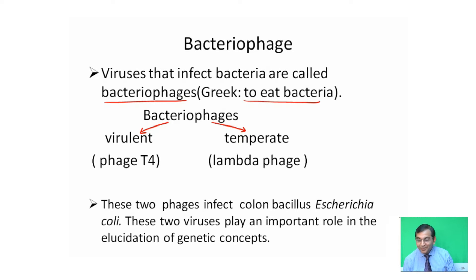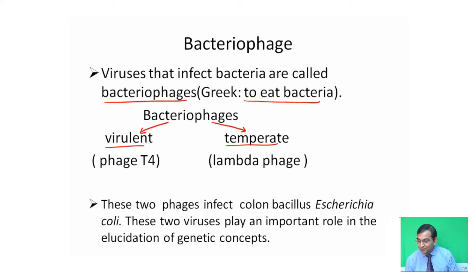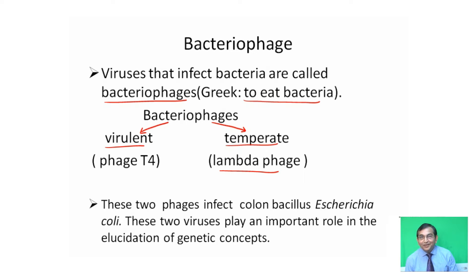Bacteriophages are of two types: one is virulent, another is temperate. Virulent phages, such as phage T4, and on the other hand, temperate phages, such as lambda phage. These two phages infect the colon bacillus E. coli, and these two viruses play an important role in the elucidation of genetic concepts.